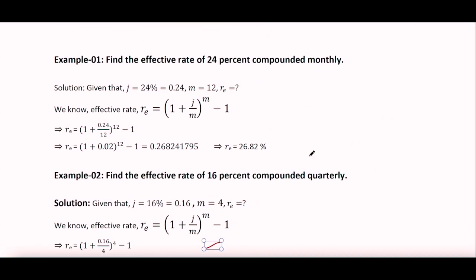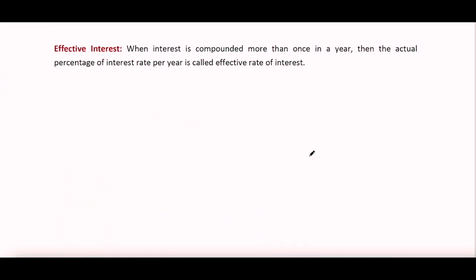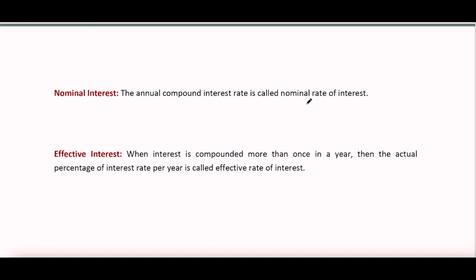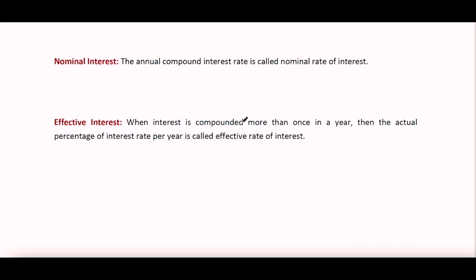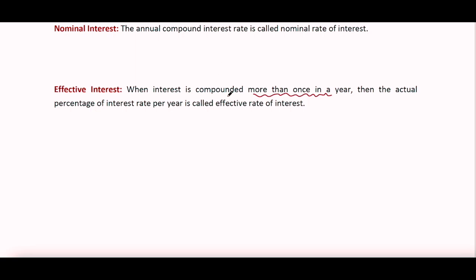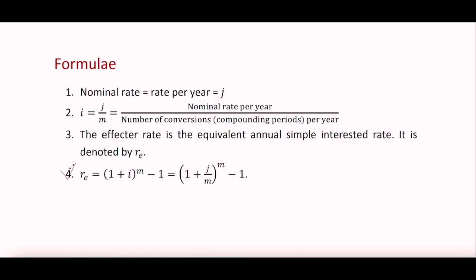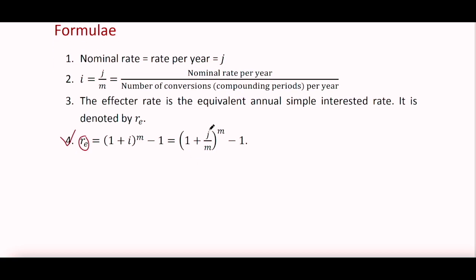Let me review the topic again. Nominal rate means rate per year — the interest rate given in your question is the nominal interest rate. When interest is compounded more than once in a year, the actual interest rate per year is the effective interest rate, also known as the effective annual interest rate. To calculate the effective annual interest rate, we use the formula r_e = (1 + j/m)^m − 1, and we only need two pieces of information: the nominal rate j and the number of compounding periods per year m.